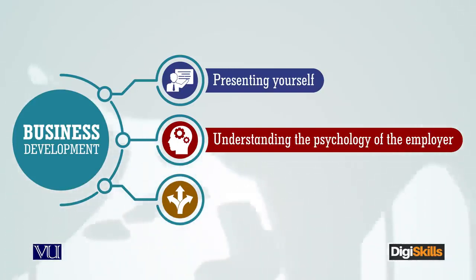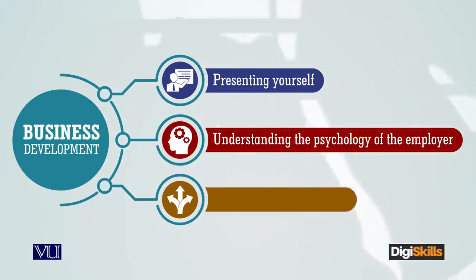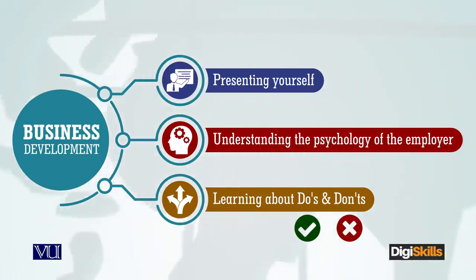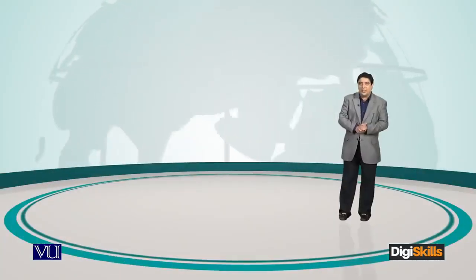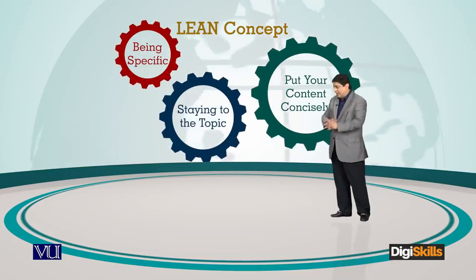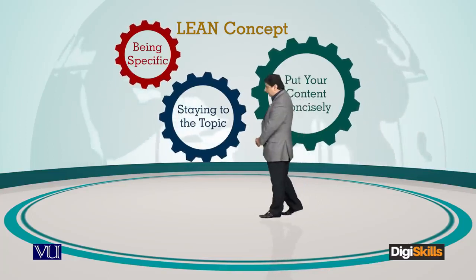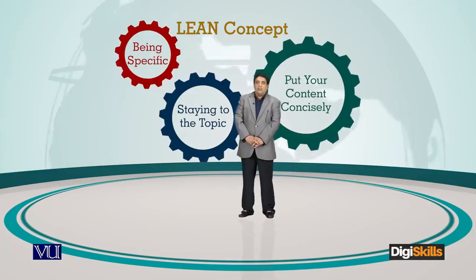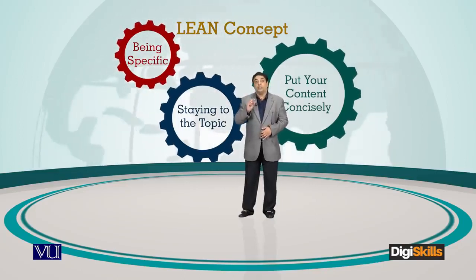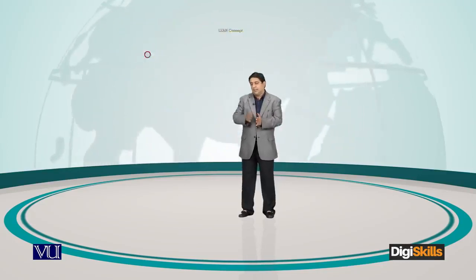سب سے important بات جو اس course میں ہم نے سیکھنی ہے اکٹھے — through interactive sessions, through videos, through a lot of graphical content — do's and don'ts کیا ہیں۔ یعنی فریلانسنگ کرتے ہوئے کن چیزوں کا خیال رکھنا ہے اور کن سے اجتناب کرنا ہے۔ Lean concept — یہ دنیا کا latest lesson ہے جو automobile industry سے نکلا ہے — which essentially means staying to the topic, being specific, and putting your content concisely۔ جتنی بات ہے اتنی ہی کرنی ہے — یہی freelancing کا سب سے important جز ہے: to understand what your employer or client wants۔